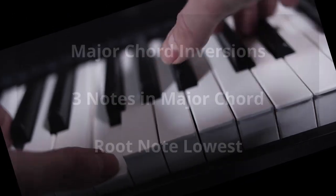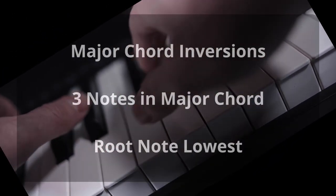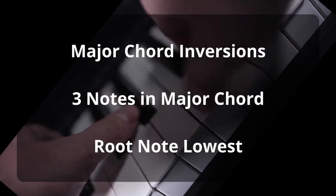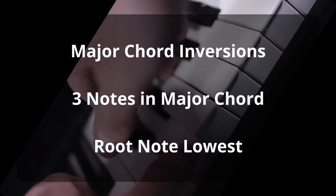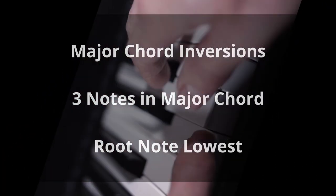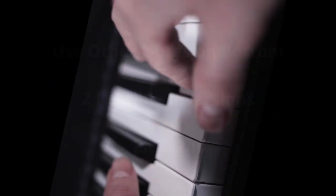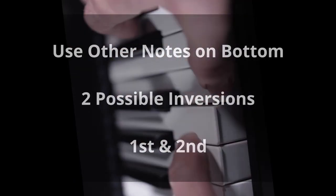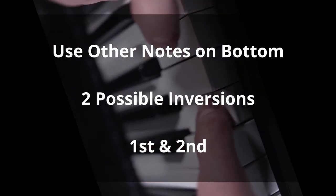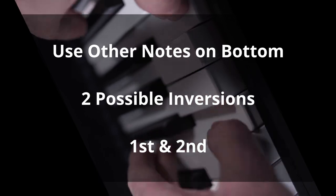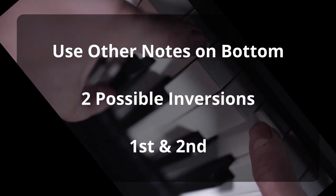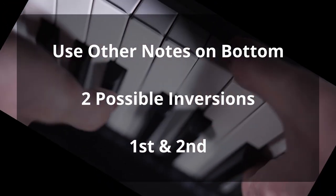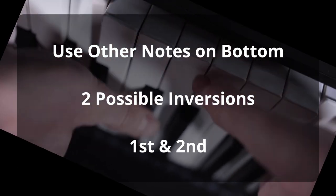What are major chord inversions? Major chords are made of three notes. Usually we play the root note as the lowest note in a chord. When we play one of the other notes as the lowest note in the chord, we call it an inversion. As there are three notes in the major chord, we have two possible inversions. These are called first and second inversions.